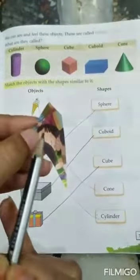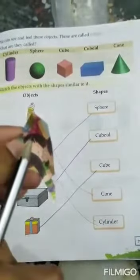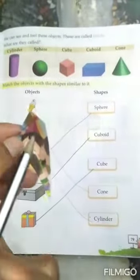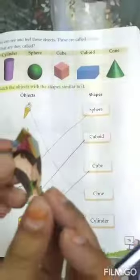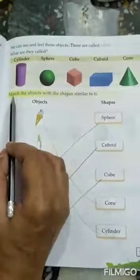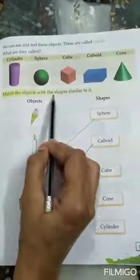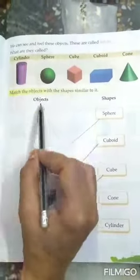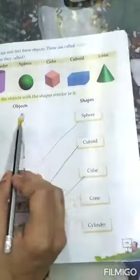Usko bhi cone kehte hain. See, birthday cap. What is the shape of this birthday cap? Cone. Cone. Yes or no? Okay, now we will do the exercise. Match the objects with the shape similar to it. Objects, shapes. Ice